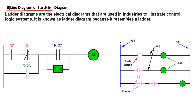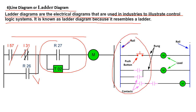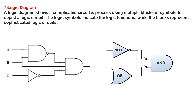The next one is the line diagram or ladder diagram. Ladder diagrams are electrical diagrams used in industry to illustrate control logic systems. It is called a ladder diagram because it resembles a ladder. Here we see the diagram where ICs are connected and shown step by step like a ladder, with rail, rung, and load mentioned. Contacts are shown in the ladder format. So the line diagram or ladder diagram resembles a ladder structure.